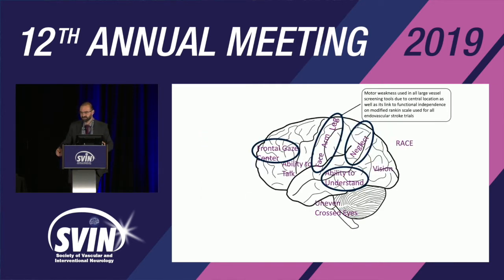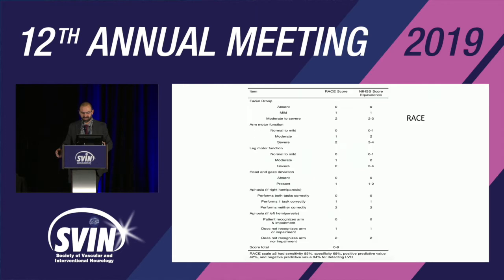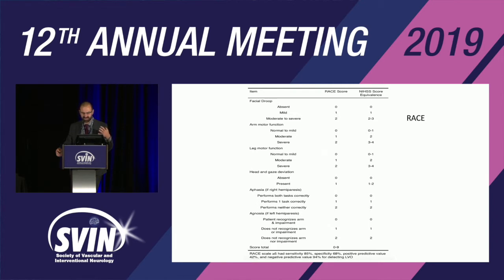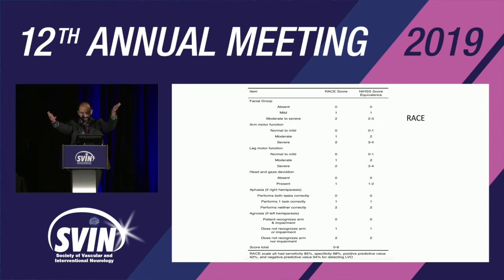Looking at specific scales: RACE tests cortical symptoms and weakness — face, arm, leg, head and gaze deviation, aphasia, and agnosia depending on which side is affected. You score severity 0, 1, or 2 for each item — for example, moderate drift versus severe drift where the arm touches the bed — then add them up. A score above 5 triggers bypass. The LA Motor Scale is unique in that it only tests motor symptoms, not cortical symptoms: hand grip and arm drift, scored 0 to 2.